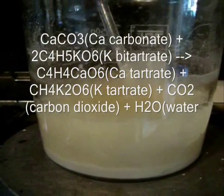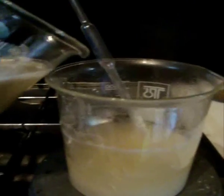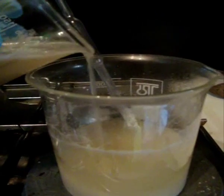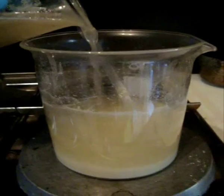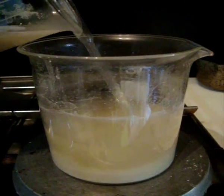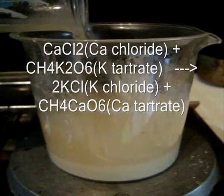This is the reaction. Then, add 15 grams of calcium chloride dissolved in hot water. The neutral potassium tartrate is exchanged into calcium tartrate thanks to a double-exchange reaction. This is the reaction.